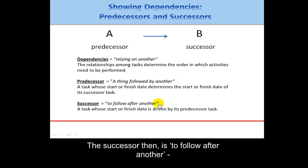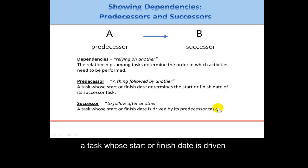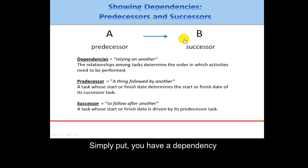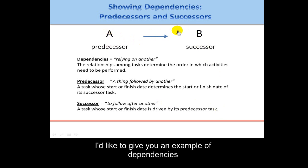The successor is a task that follows after another — whose start or finish date is driven by its predecessor task. Simply put, you have a dependency: the predecessor task is done first, before you can do the successor task, which is done next.